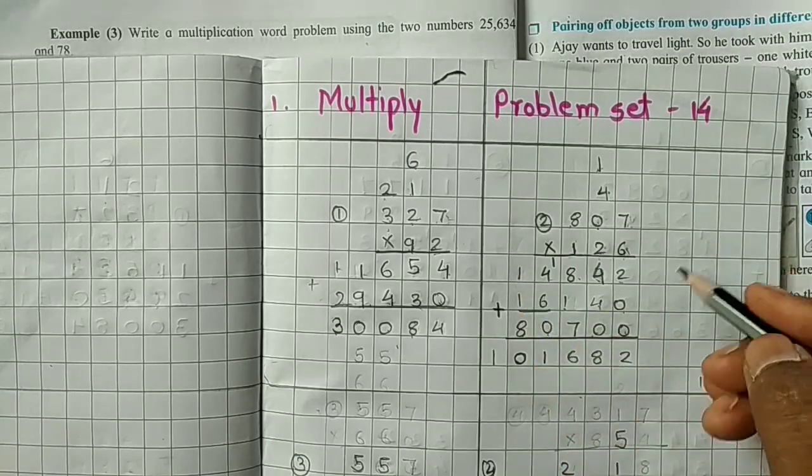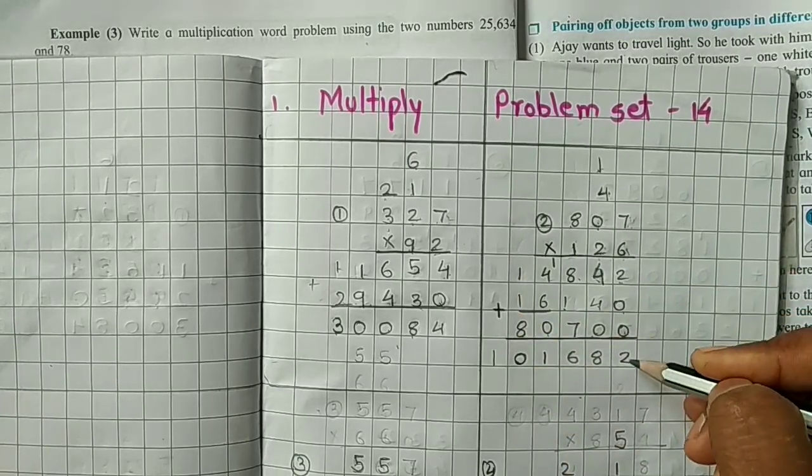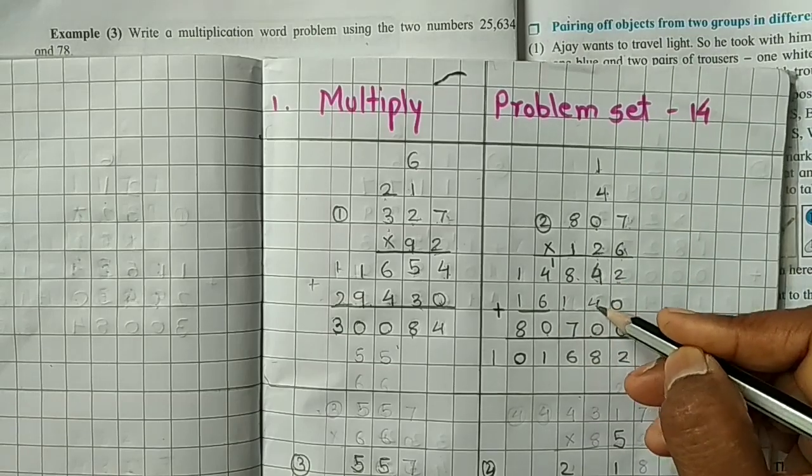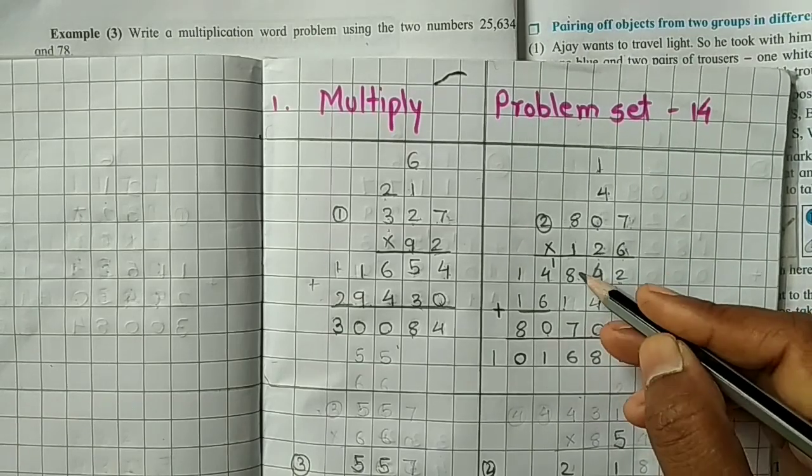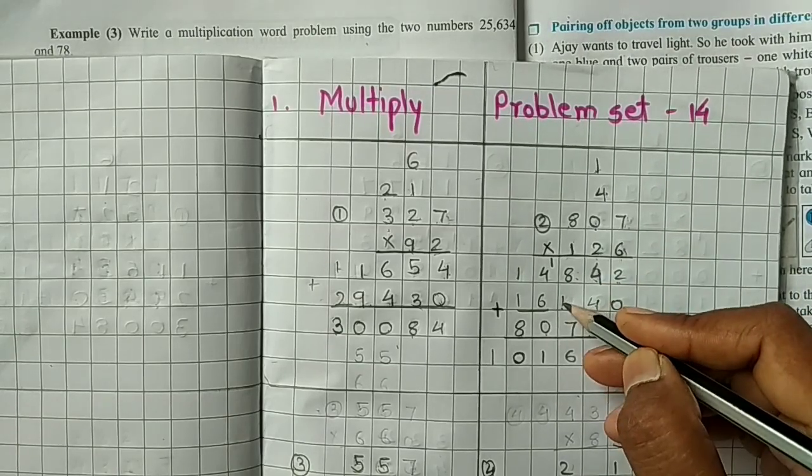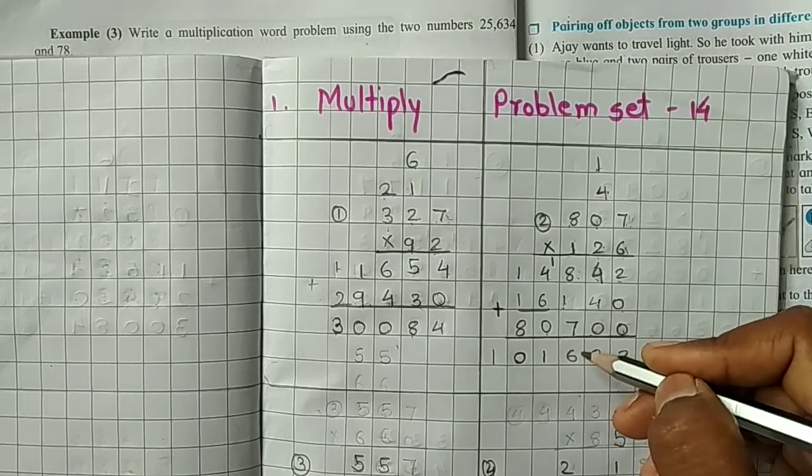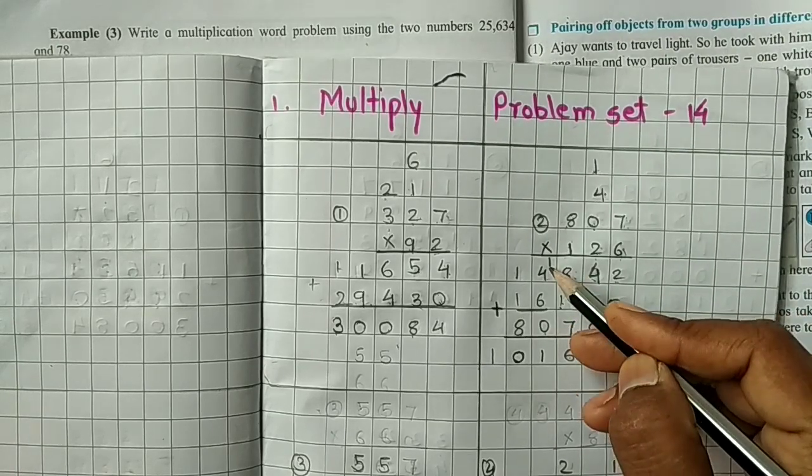Now we are adding. 2 plus 0 plus 0, 2. 4 plus 4 plus 0, 8. 8 plus 1, 9. 9 plus 7, 16. So write 6 here, 1 carry forward.